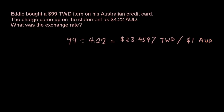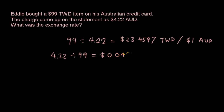Because if you go 99 divided by 4.22, you get the amount of Taiwanese dollars per Australian dollar. But if you want to do it the other way around, so if you go 4.22 divided by 99, then you will get 0.04262 Australian dollars for one Taiwanese dollar.